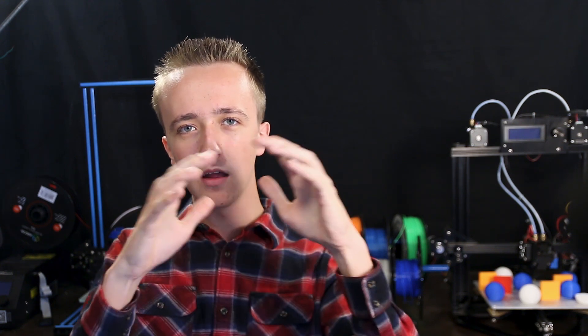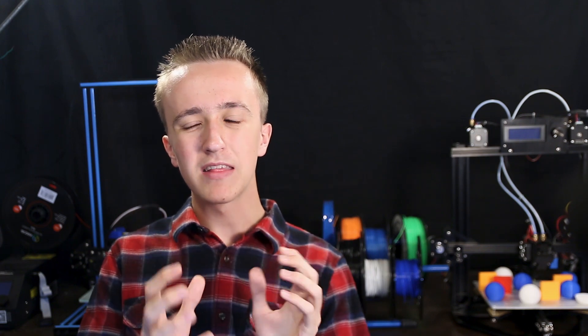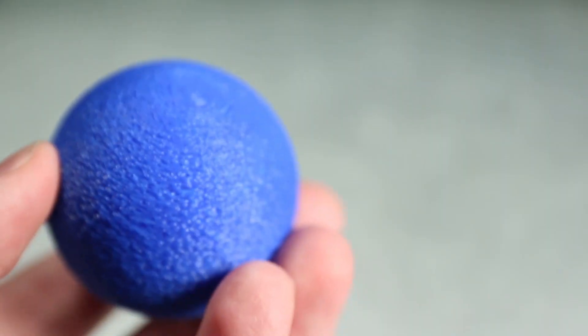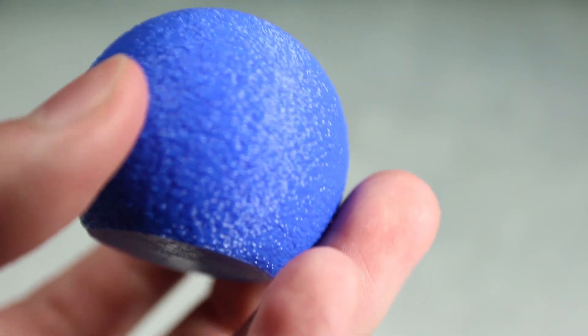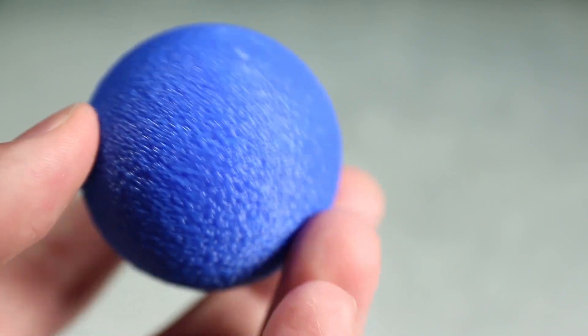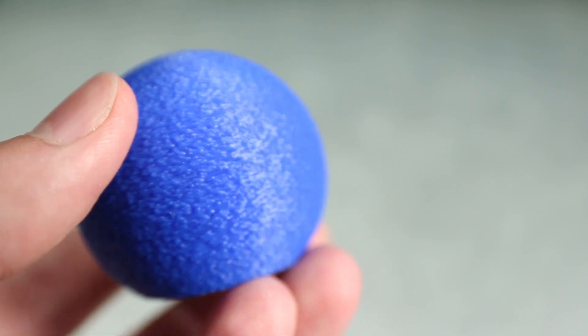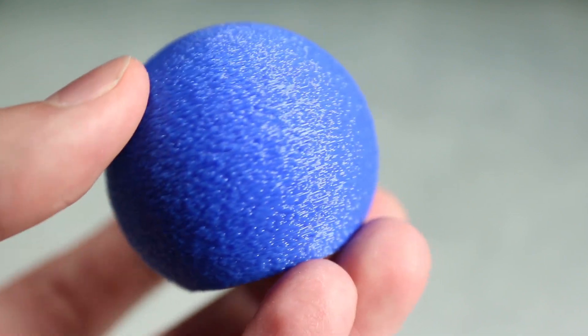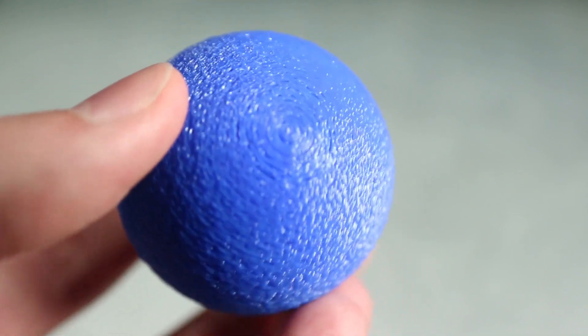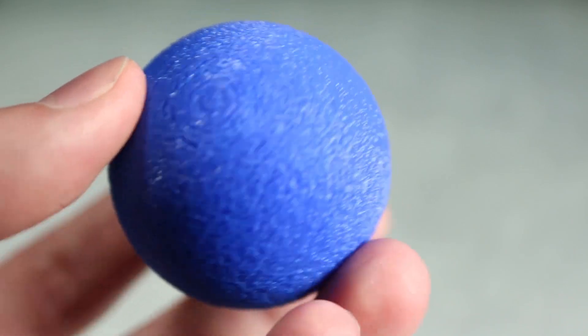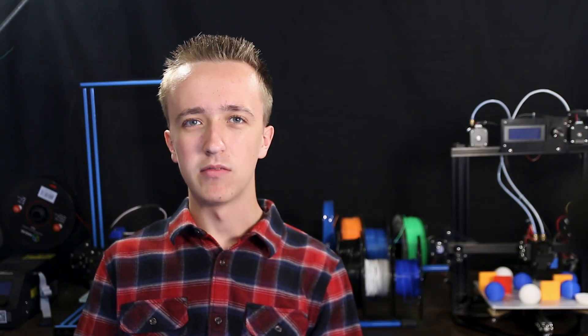This one might sound like a gimmick at first, but it's actually really useful. Instead of printing a really smooth surface, it makes a rough texture and that allows you to get a really uniform look. You don't see any print imperfections and it also creates a really grippy part. So if you have any parts that you want to grip onto and you don't feel like modeling the rough texture in the modeling program, you can just enable fuzzy skin and this will create it for you.